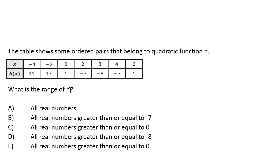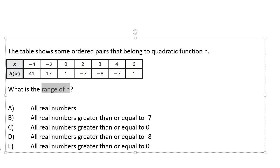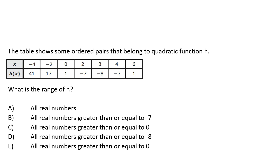We could probably answer most of the question just by looking at the word range. Range has to do with all of the possible y-values of a function. But if we look at the table, there aren't any y-values listed — there's x and then there's h of x. Well, h of x could also be considered y. So what's the range of h? It's all the possible y-values of h.